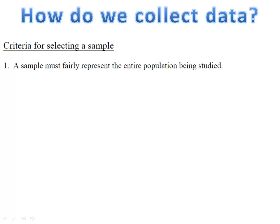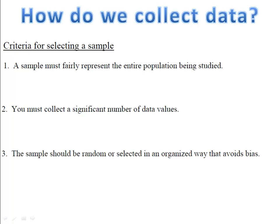When we select a sample, we have to be very careful. There are several criteria we must adhere to. First, the sample must fairly represent the entire population being studied. If you're interested in an entire high school population, it's not sufficient to ask only 9th graders — you'll want to ask all classes: 9th, 10th, 11th, and 12th grade. You must also collect a significant number of data values — it's better to ask 5,000, 10,000, or 20,000 people. Finally, your sample should be random so that you don't have bias. Picking names out of a hat or asking every 10th person who enters the supermarket are ways to avoid bias — your sample is completely random.